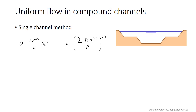We first consider the single channel method, where the velocity is assumed to be constant all over the cross section. This leads to the calculation of the discharge with the classical form of the Manning equation. If the roughness of the different parts of the cross section are different — for example, a different value on the floodplains and in the minor bed — an equivalent Manning coefficient can be calculated as seen for a heterogeneous cross section.